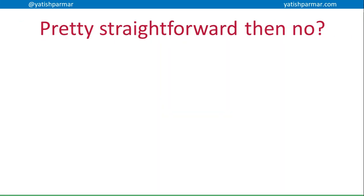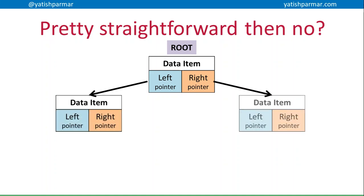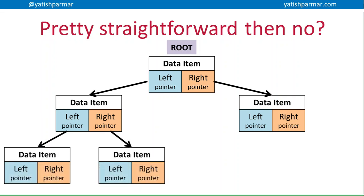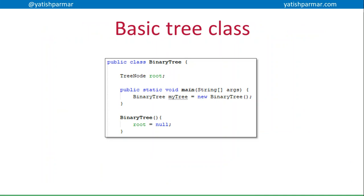Creating a tree should be quite straightforward if you think about that. Basically, we're going to have a root node. The root node is going to have a data item, a left pointer, and a right pointer, and those are just going to be pointing to further data items, which would then point to more data items, and so on.